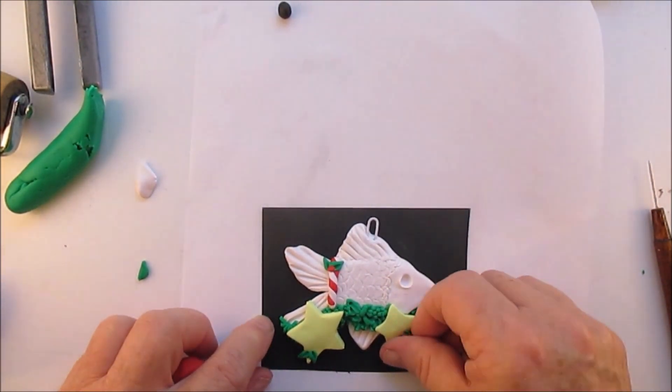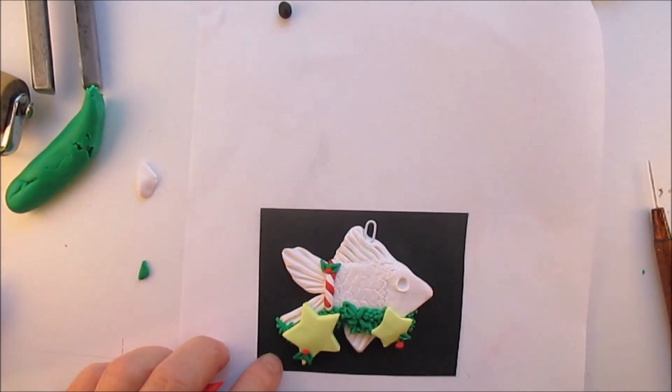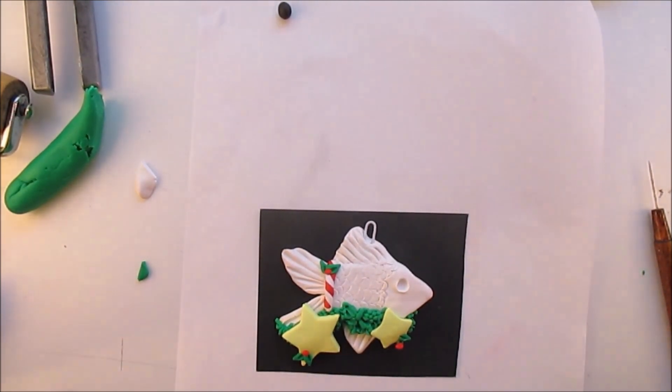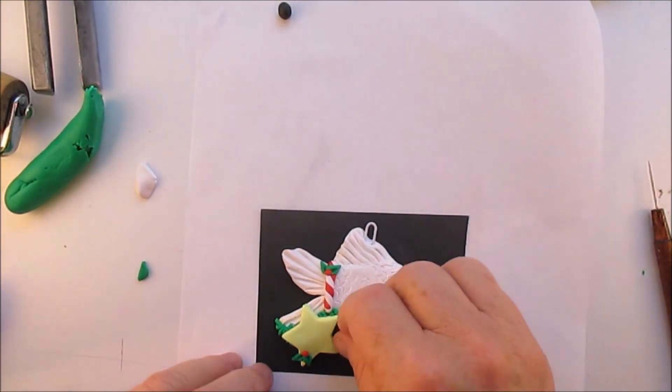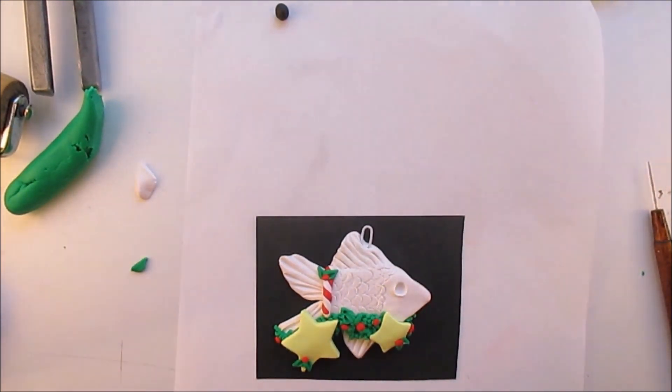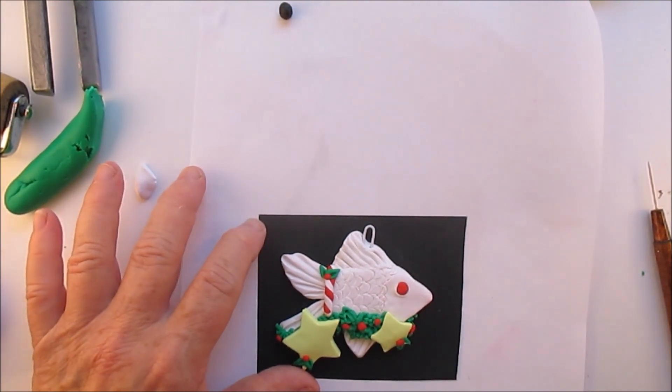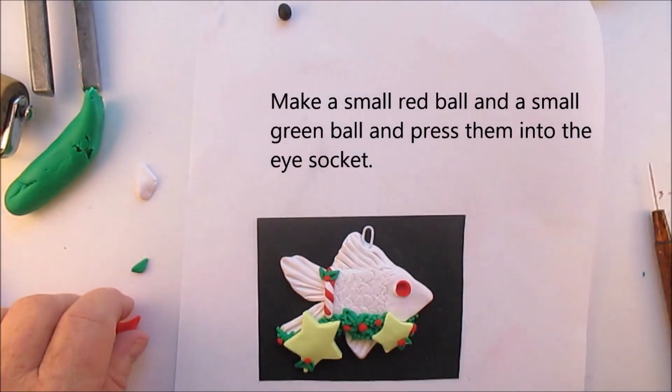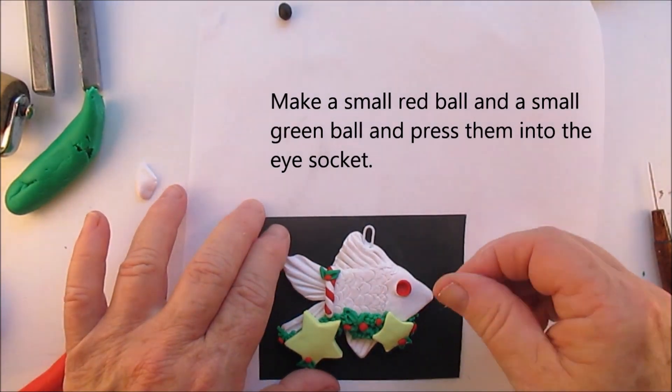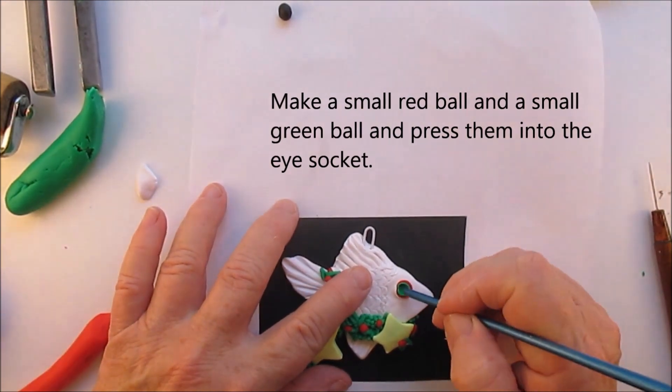Put your little red berries on the holly leaves, and then put some little red balls on the garland also. Now, when you do the eyes, you can use different colors. You don't have to use the colors that I used. You can make it blue, or light blue, or light green, just whatever you want. I just kind of went along with the Christmas colors.